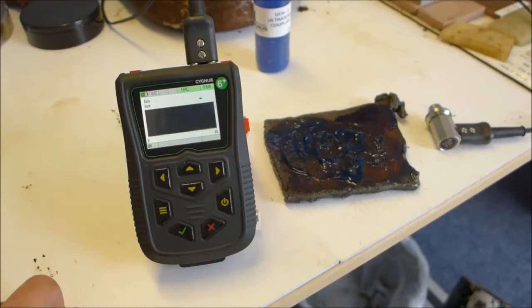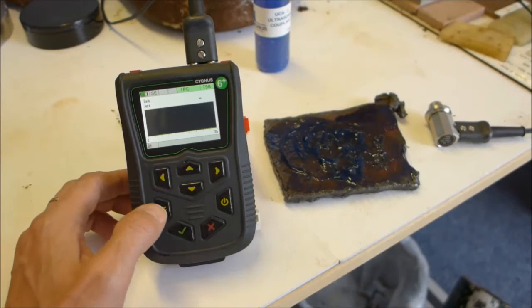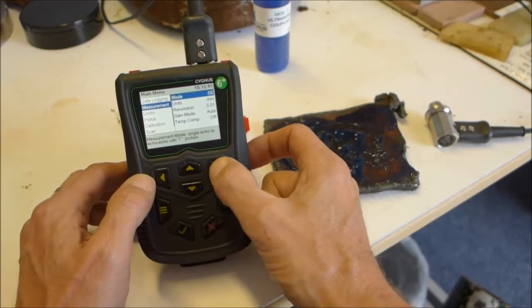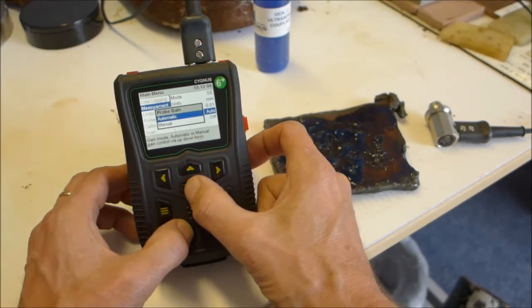This is a demonstration of the Sigma 6 Plus with automatic gain control. Go to the menu, scroll down to measurement and across down to gain mode. Select gain mode and choose manual.